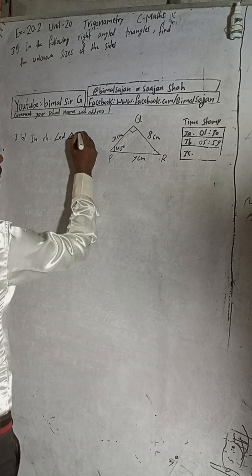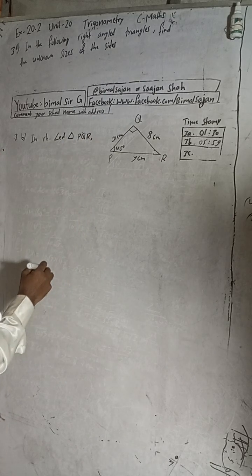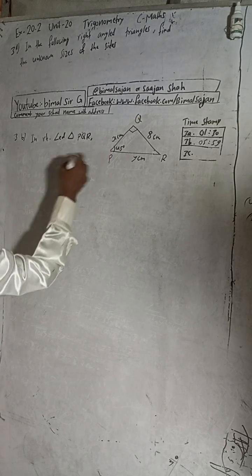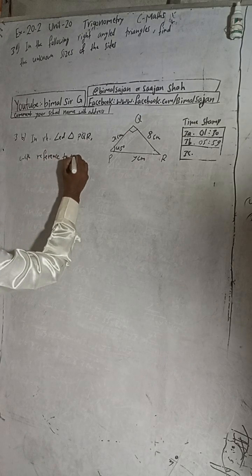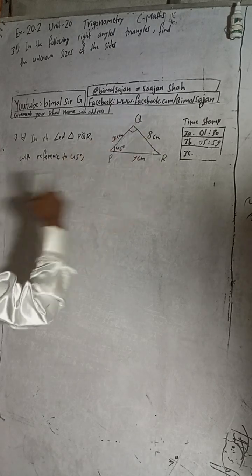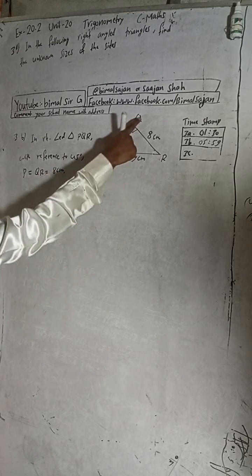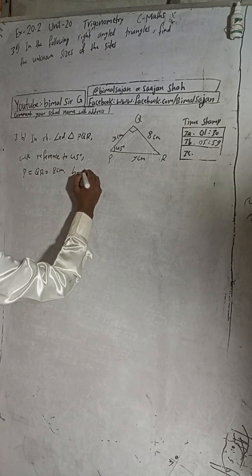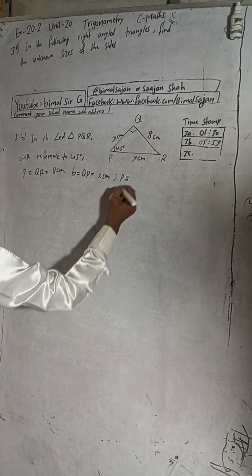This is Question 3b. In triangle PQR, with reference to 45°, the perpendicular is QR, the base is PQ, and the hypotenuse is PR. The perpendicular QR is given as 8 cm and the base is x, while the hypotenuse is y.